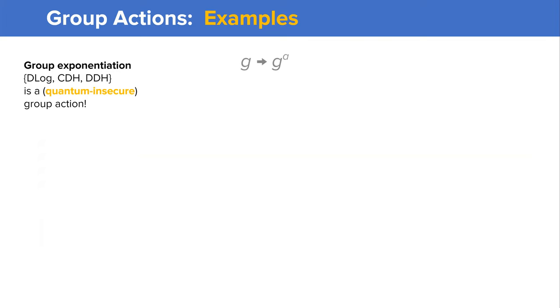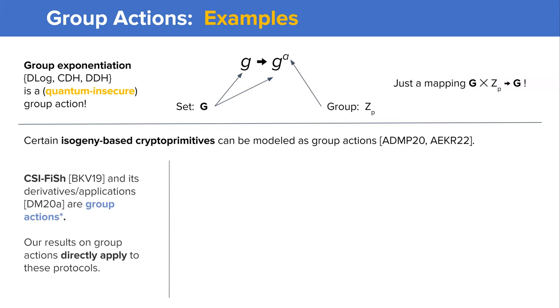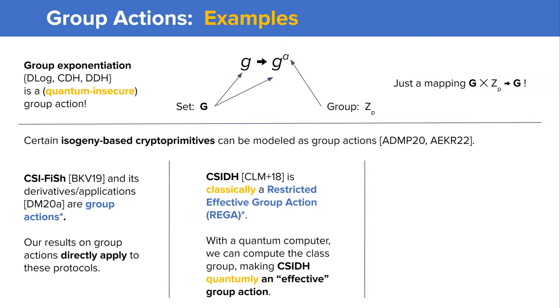The most well-known group action turns out to be group exponentiation — the same one used in traditional group-based discrete log, CDH, and DDH assumptions. If we treat the group G as a set and the integer exponent as a group, then exponentiation can just be thought of as a standard group action. More interestingly, and more relevant to post-quantum cryptography, certain isogeny-based primitives can be modeled as group actions. For instance, CSIDH and its derivatives are essentially group actions, while SEASIDE is modeled as something called a restricted effective group action.